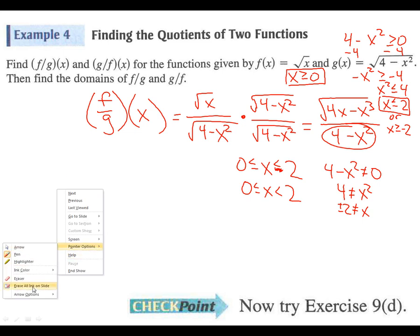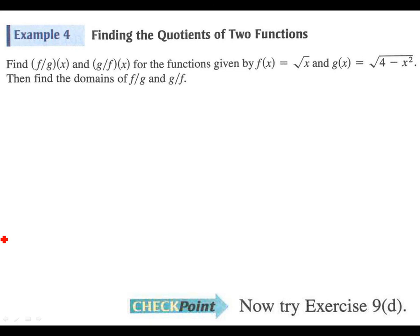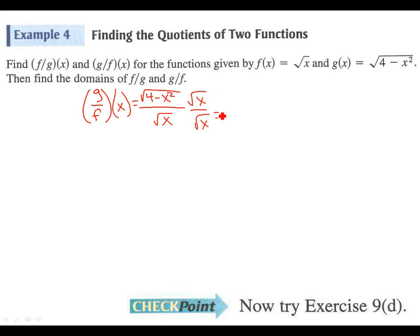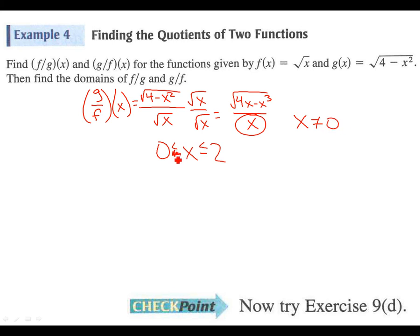Now we're going to do g over f: the square root of 4 minus x squared over the square root of x. Cleaning this up, we get the square root of 4x minus x cubed over x. We know from the last one that the numbers in common are between 0 and 2. But now our denominator changed, so we say x cannot equal 0. So now the domain is 0 is less than x is less than or equal to 2. If this part is a little tricky, the domain of the quotients is probably the hardest part of this section. Try part d — exercise 9d — when you're ready.